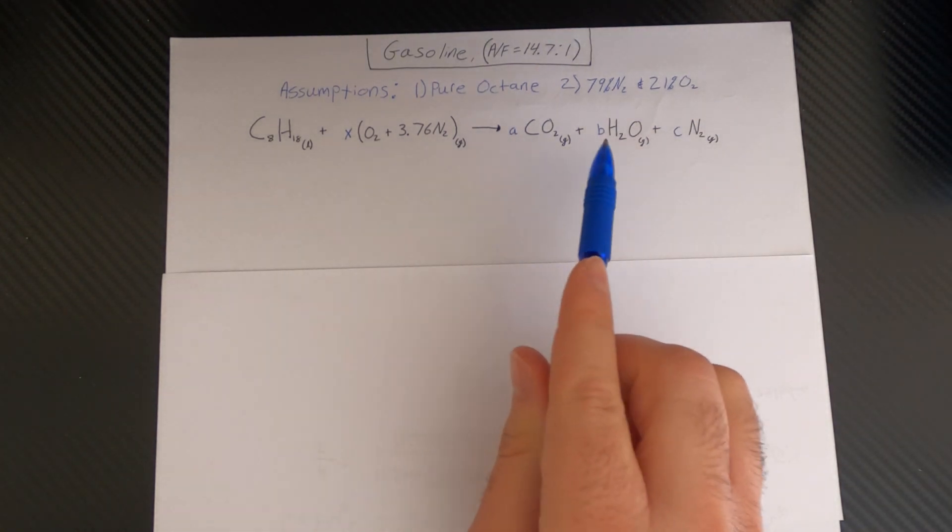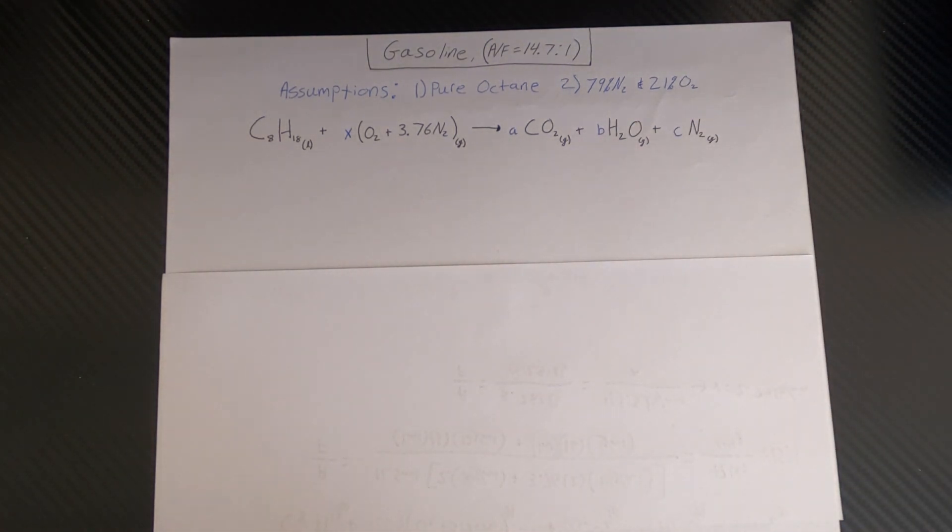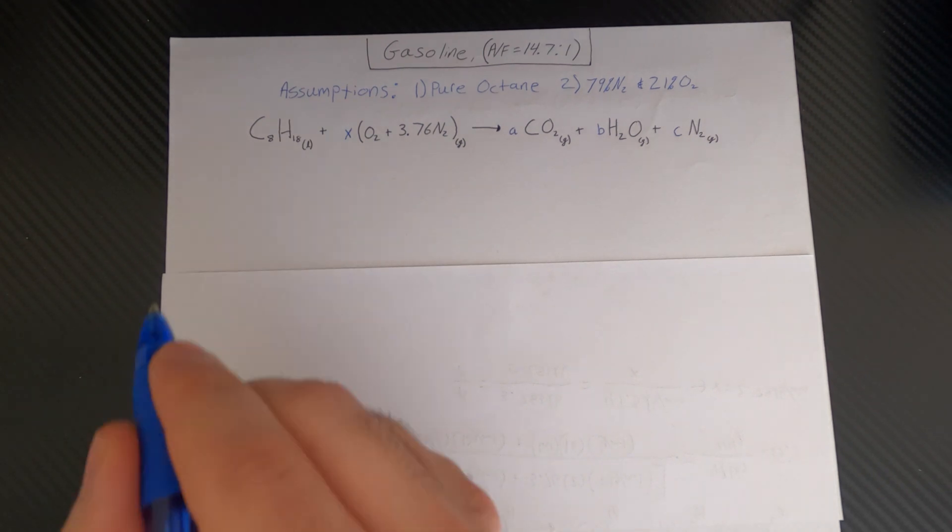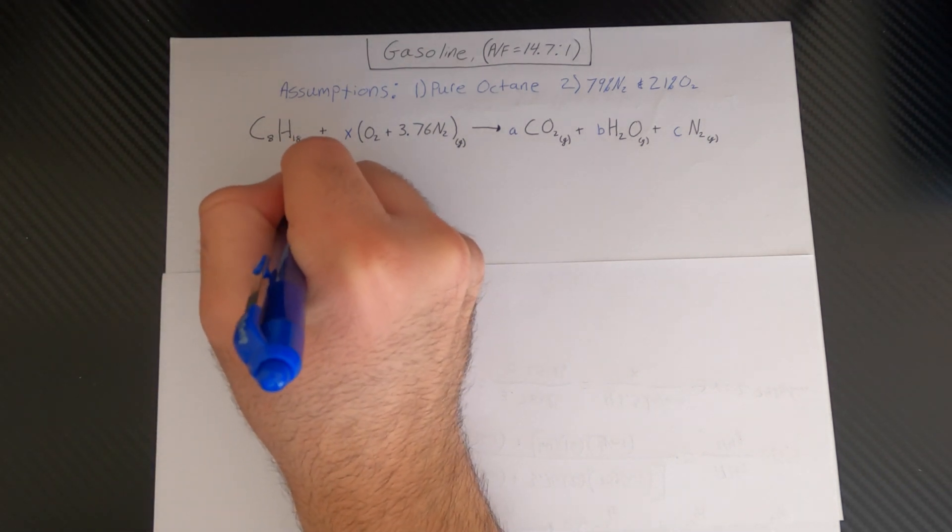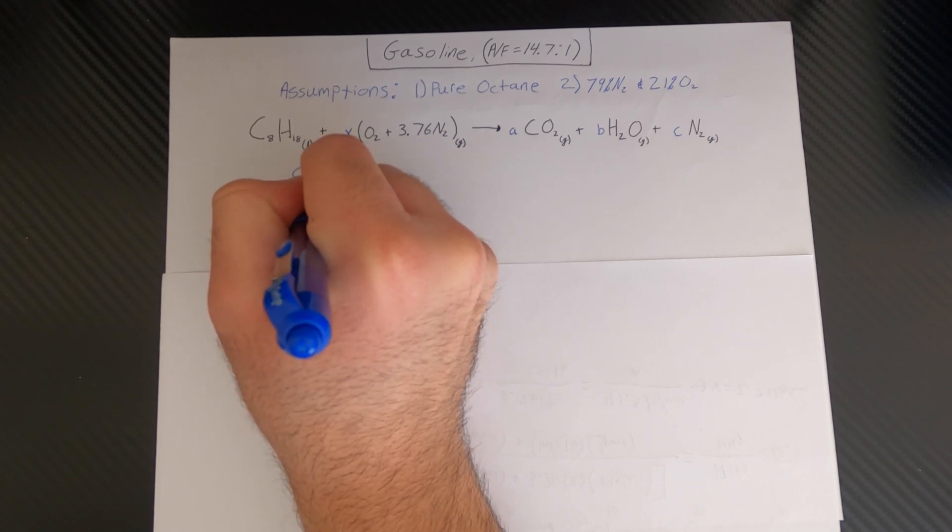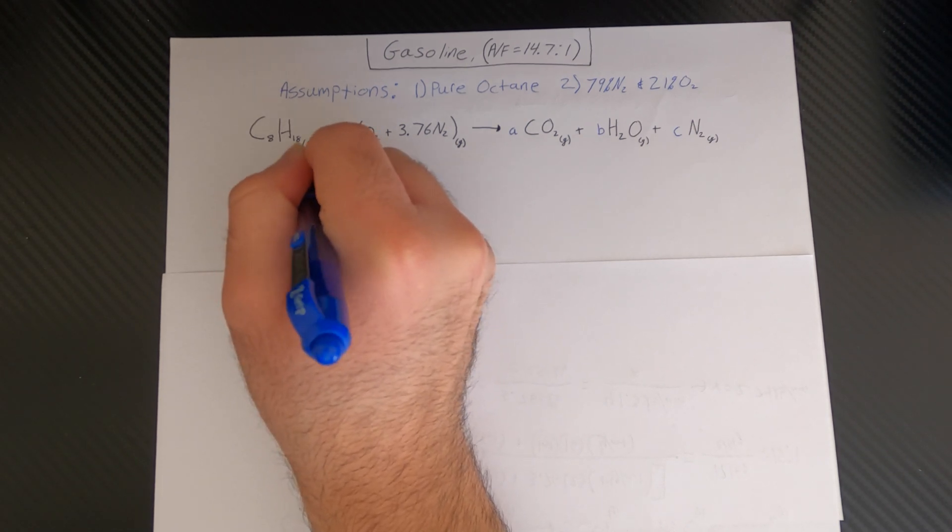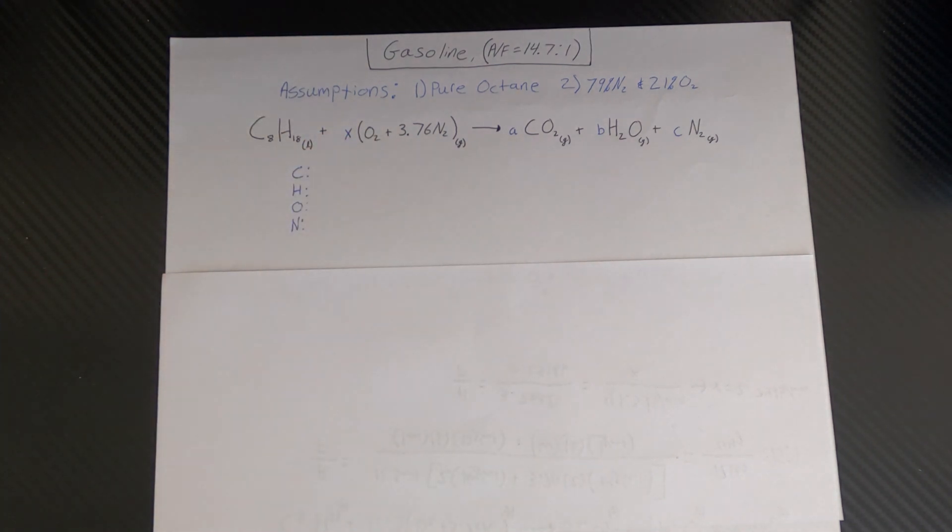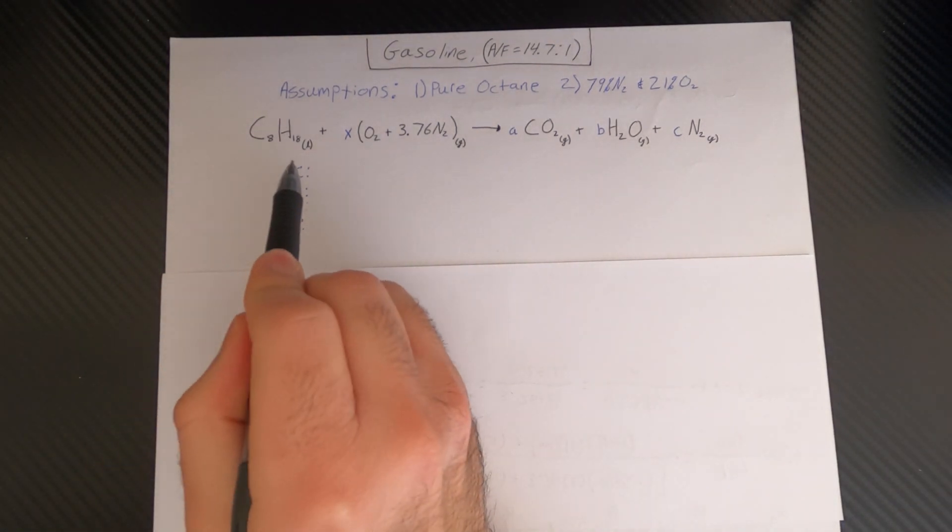So in this case we have four unknowns here, so we need four equations. So if we have carbon, hydrogen, oxygen, and nitrogen, we can formulate four equations to solve for the four unknowns. So at this point all we have to do is balance the left side of the equation to the right side of the equation.